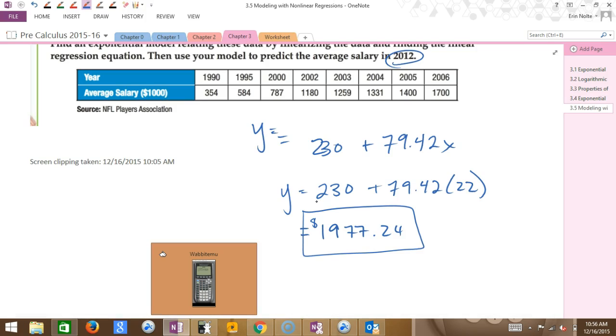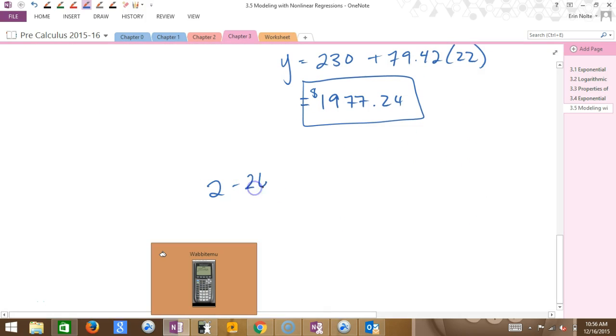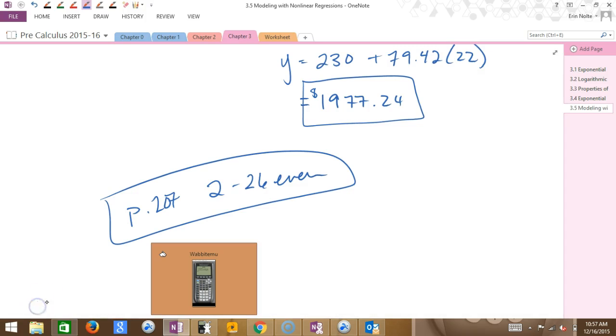All right, so your assignment is on page 207. And I'm going to have you do two through 26. Two through 26 evens. Page 207. So ideally I want you guys to finish this in class, right? Because I don't want calculators going home, and you need one of these TI calculators to finish this. So get to work in class now, pronto.